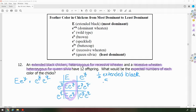Now we want to know how many out of 12 are going to be extended black, so we're going to multiply one half, or 0.5, times 12, to get six extended black.